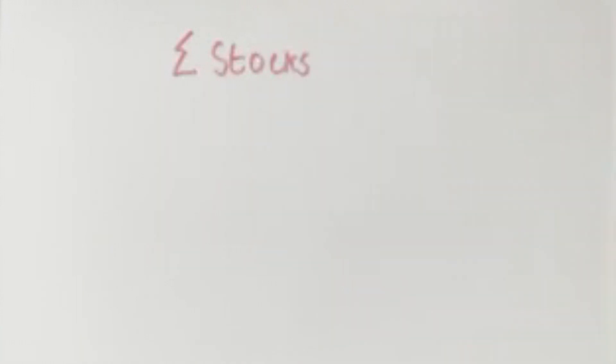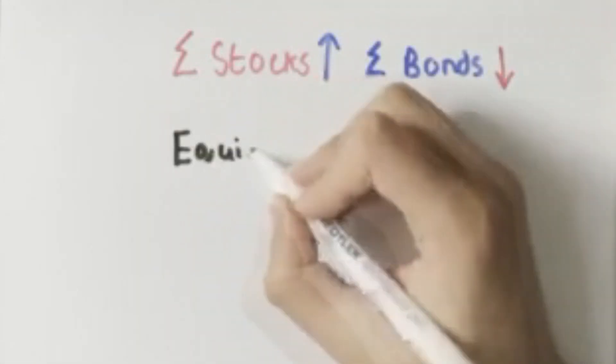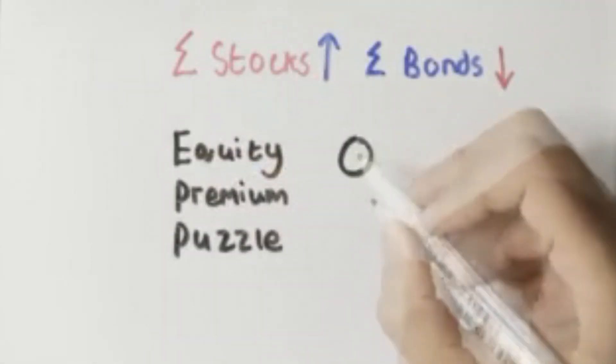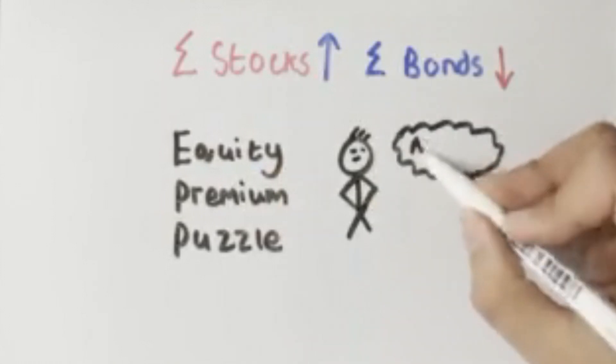How could a risky asset like stocks possibly give better and higher consistent returns than a risk-free asset like government bonds, which is a sure bet? They named this the equity premium puzzle because it was a puzzle as to how stocks had better average returns than government bonds.